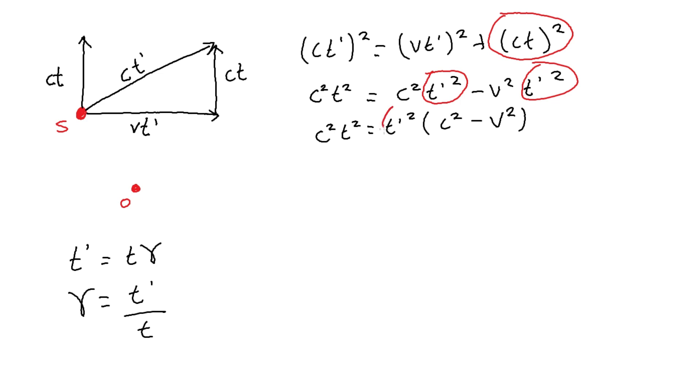The next step is to divide both sides by T prime squared and by C squared, which gives us T squared over T prime squared is equal to C squared over C squared minus V squared over C squared.